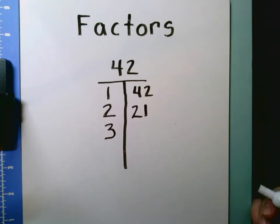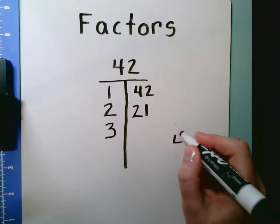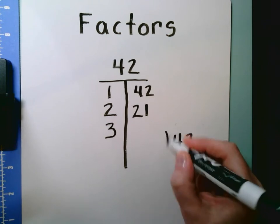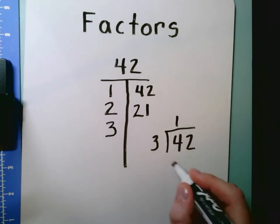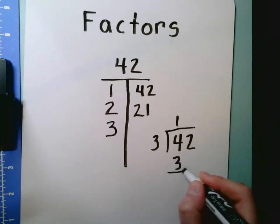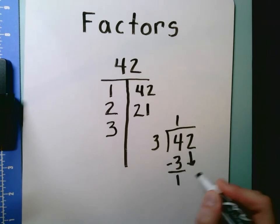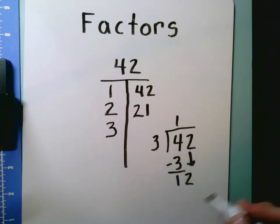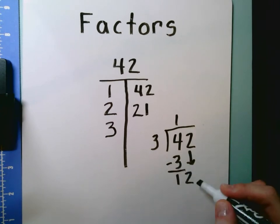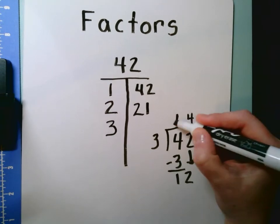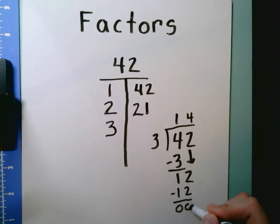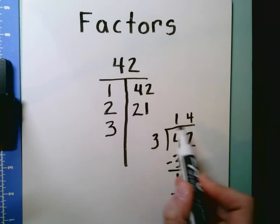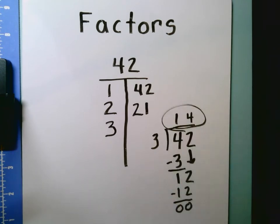Now, what times 3 equals 42? What's the factor that goes with 3? Again, I can put 42 in my calculator and do 42 divided by 3, or I can do long division. 42 divided by 3: 3 times 1 is going to get me closest to 4 — 3 times 1 is 3. I bring down my 2, and now I have 12. 3 times 4 equals 12. When I subtract, I don't have a remainder. So 3 times 14 equals 42.